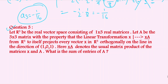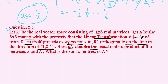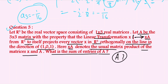The next question is from linear algebra. Let ℝ³ be the real vector space of 1×3 real matrices. Let A be a 3×3 matrix such that the linear transformation x ↦ xA from ℝ³ to itself projects every vector x onto the line in the direction of (1, 0, 1). We need to find the sum of all entries of A.